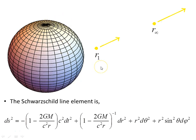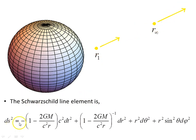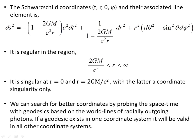Here we have the Schwarzschild geometry, with photons on the outgoing radial null geodesics. The Schwarzschild line element is this object here. The Schwarzschild coordinates t, r, theta, phi and the associated line element is written in this form here.